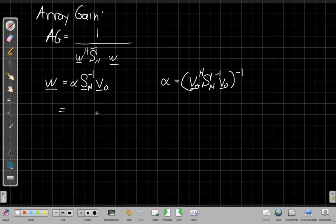And remember that we've got SN is equal to sigma naught squared times SN bar. This is the sort of power scaling and this is the spatial structure. So if I take the inverse of both sides, I can do that easily because sigma naught squared is just a scalar, a one by one number. So SN inverse is equal to sigma naught squared inverse SN bar inverse.